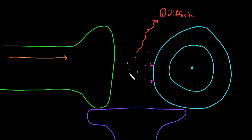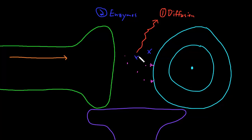It turns out that there are several ways that this happens. The first active method is enzymes that can break down the neurotransmitter in the synapse. Certain synapses contain enzymes that will actually break down the neurotransmitter into its component parts, which are no longer able to stimulate the neurotransmitter receptor — so they're removing active neurotransmitter from the synapse.